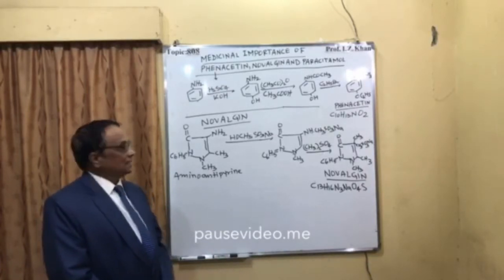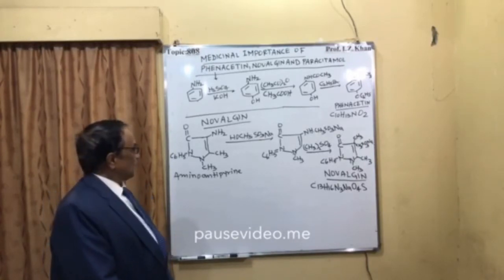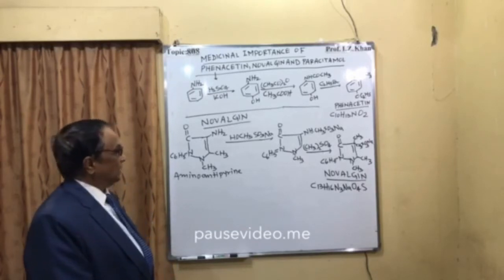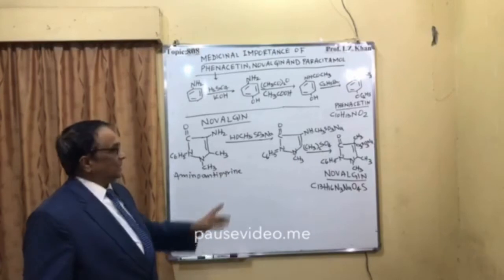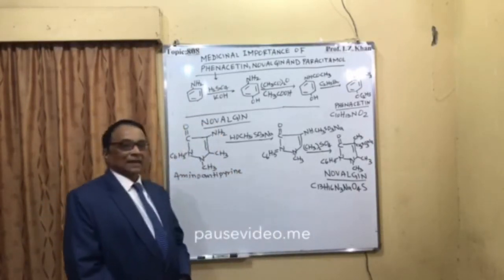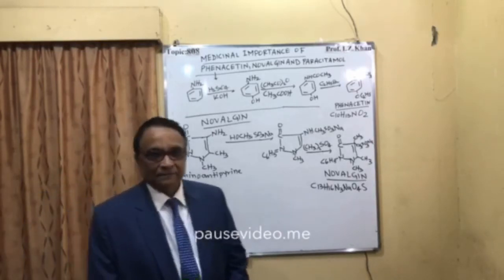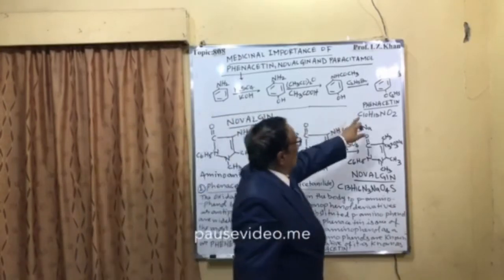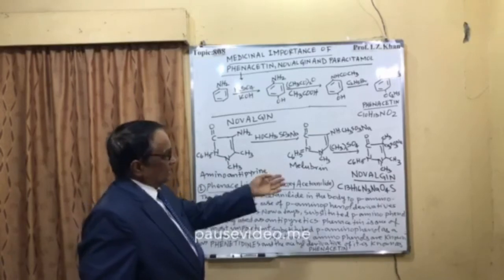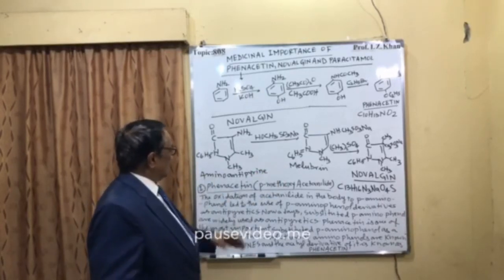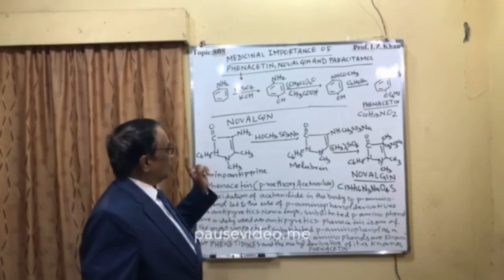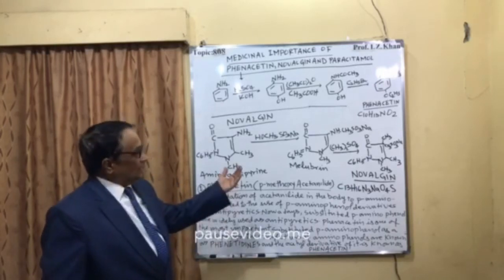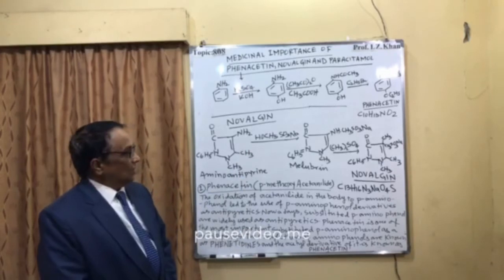Novalgene is also an analgesic and antipyretic, used in combination with aspirin and sometimes some percentage of caffeine. It can be synthesized starting from aminophenol. Novalgene is actually synthesized from amino-antipyrin; from amino-antipyrin we get melubrine. Melubrine itself is widely used as an antipyretic agent, and from melubrine it is converted into Novalgene.